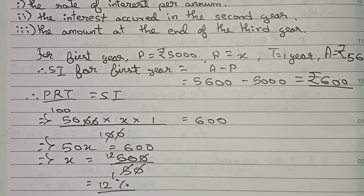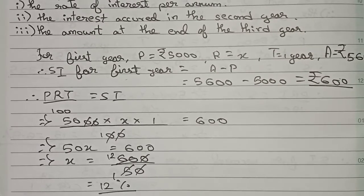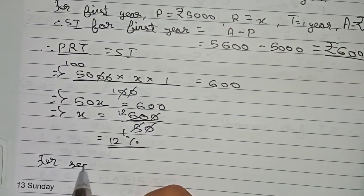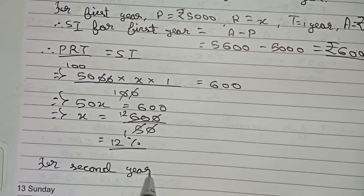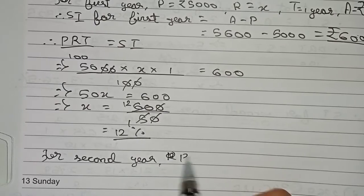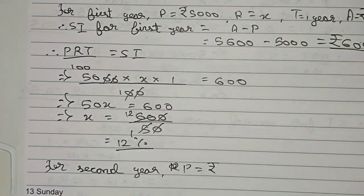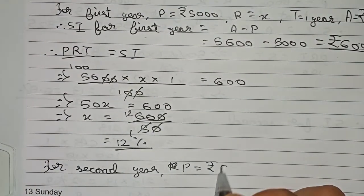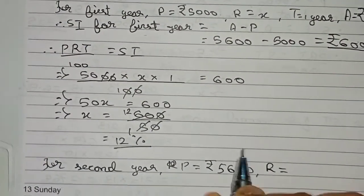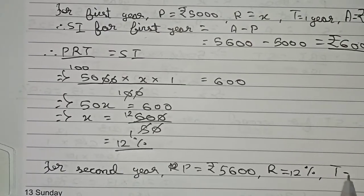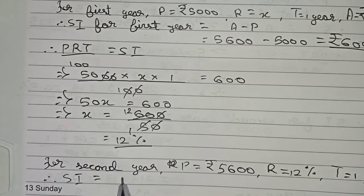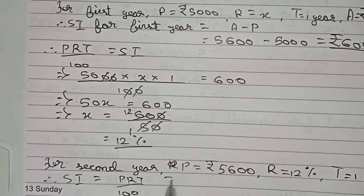The question asks us to find the interest in the second year. For the second year: the principal equals the amount at the end of the first year, which is given as rupees 5600. The rate is 12% and time is one year.